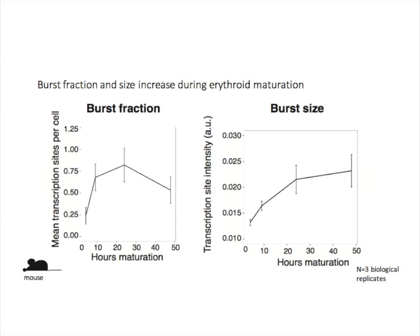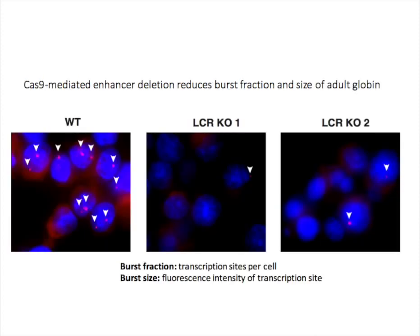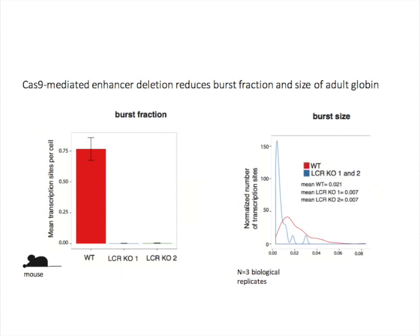Next, we examined how the increases in burst fraction and size might be regulated at a molecular level. We used CRISPR-Cas9 technology to delete the enhancer that controls the globin gene, which is known as the locus control region, or LCR. In the two independent enhancer deletion clones we generated, both burst fraction and burst size of globin are decreased. If we look at the quantification, burst fraction is reduced by about 300-fold, while burst size is also significantly reduced, but by about 3-fold. This suggests that this enhancer chiefly turns on the globin gene by increasing burst fraction, though it also increases burst size.